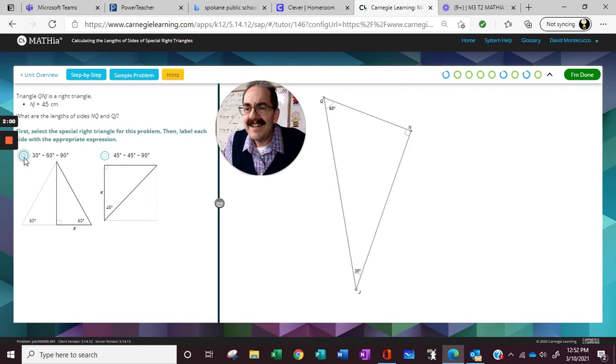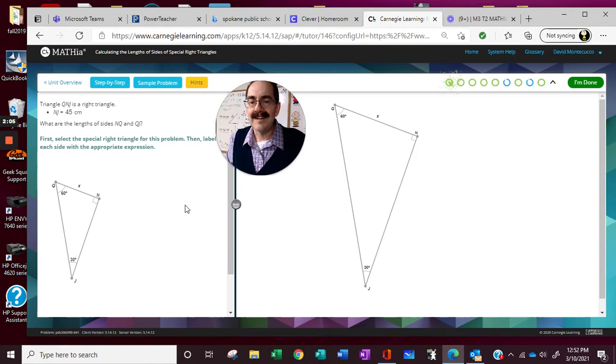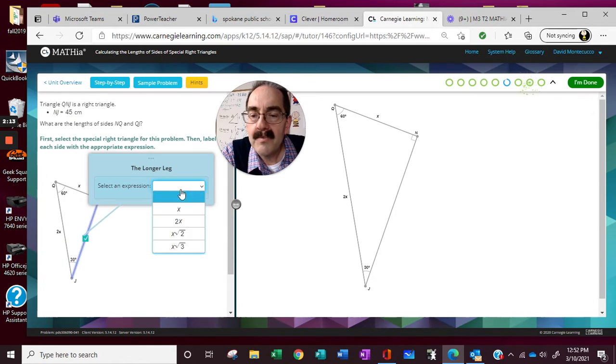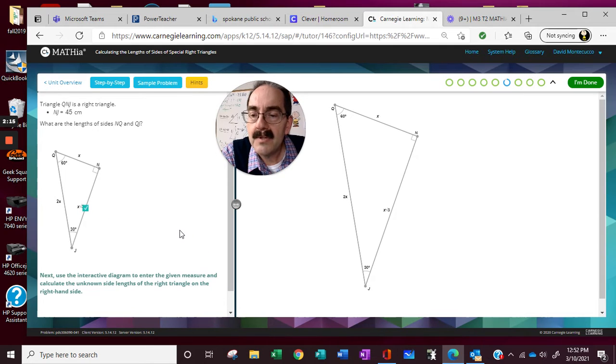30, 60, 90. And we know that this is always double the short leg. This is radical 3, the short leg.